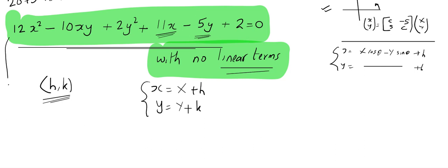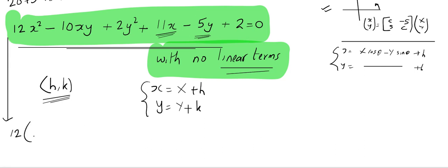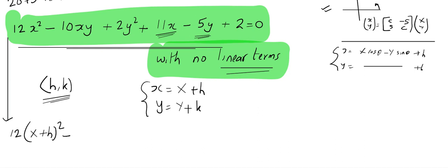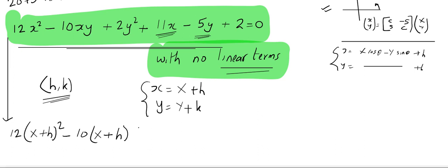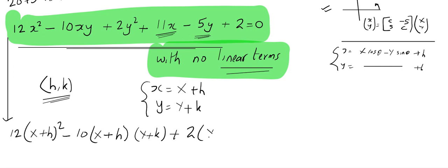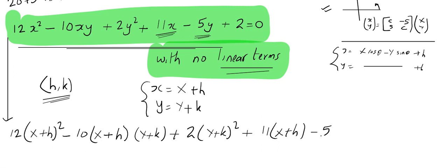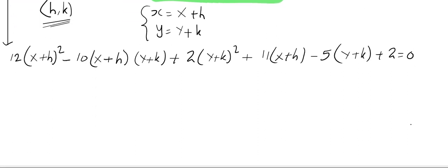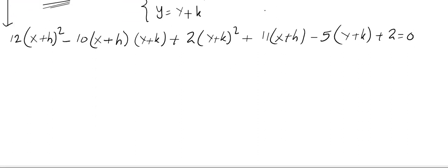The transformed equation is: 12(X + h)² − 10(X + h)(Y + k) + 2(Y + k)² + 11(X + h) − 5(Y + k) + 2 = 0. I strongly recommend: pause the video, try to work it out yourself, and at the end compare your answer with what I show in the video.